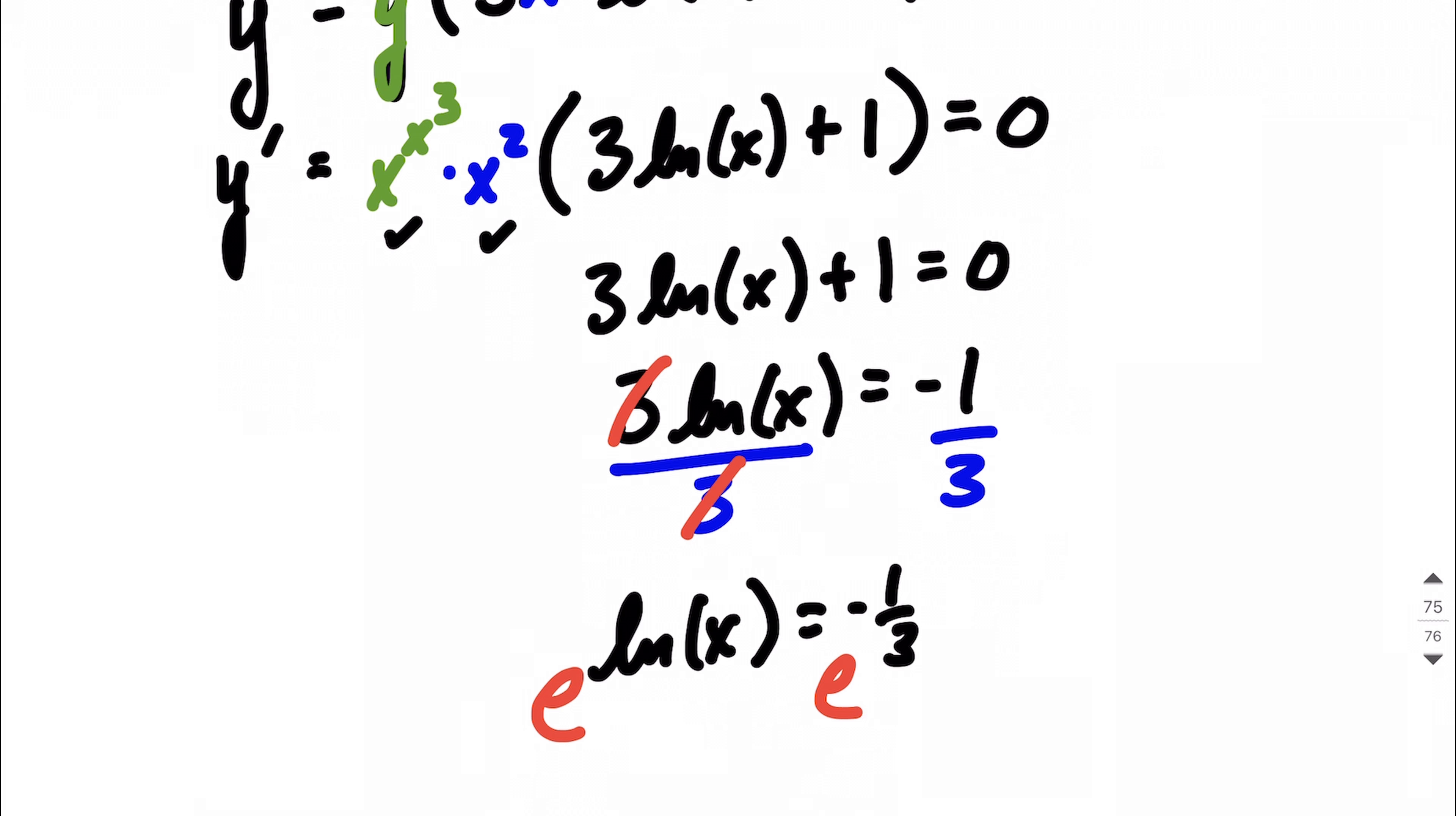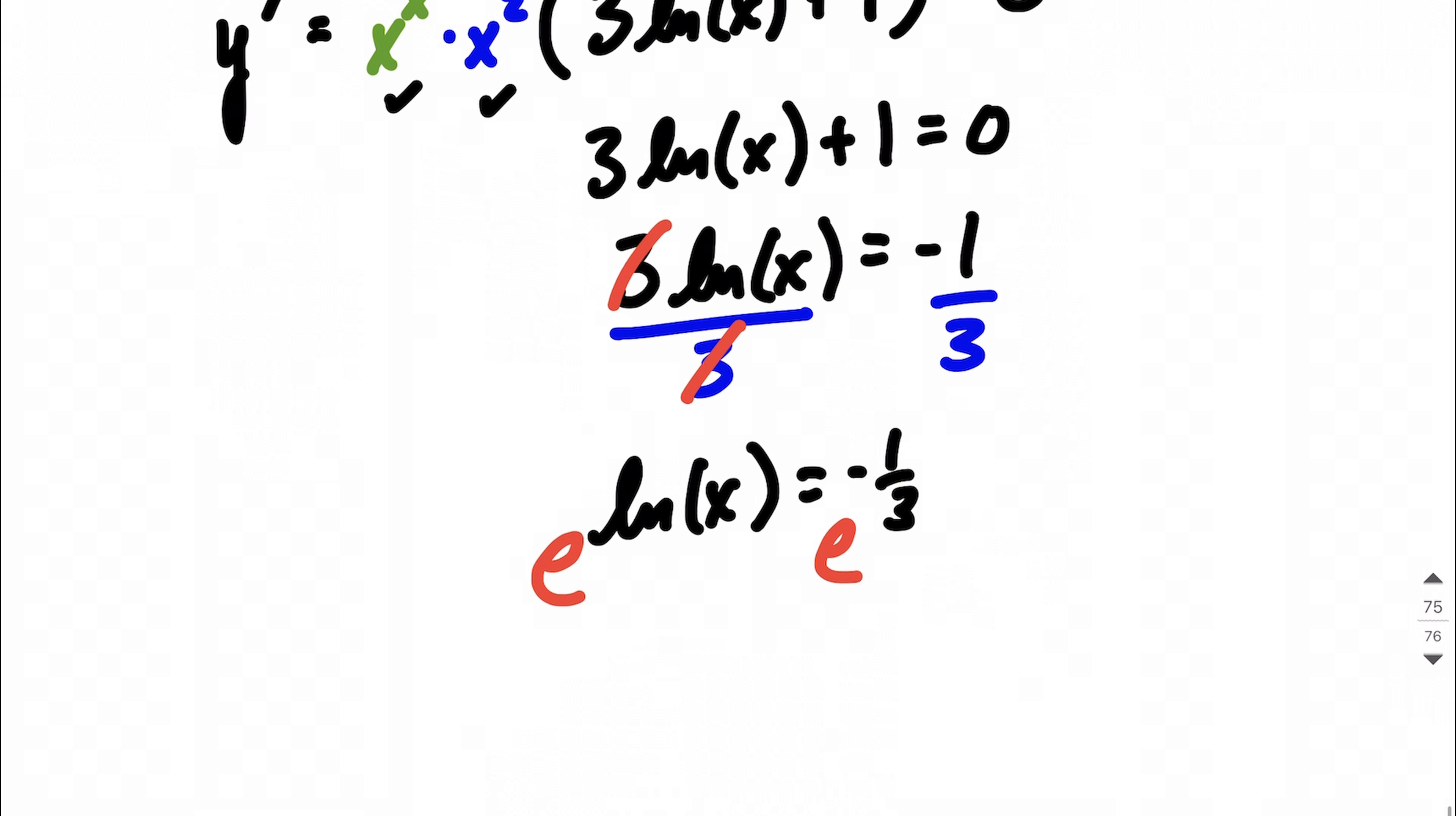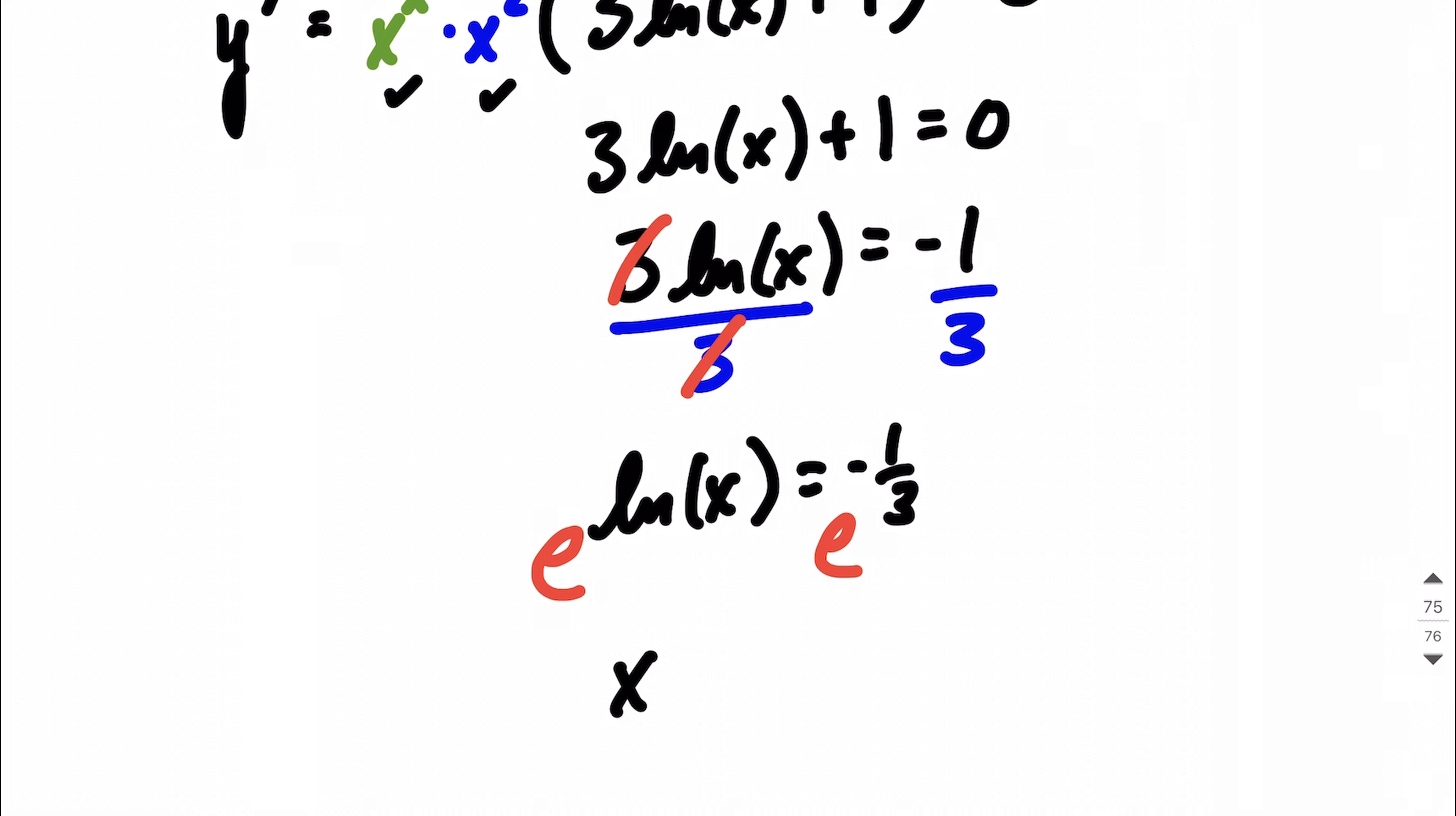The reason being, on the left-hand side, when you compose together a natural log and e to a power, you get this nice canceling out. Those are inverse functions. You get x all by itself. Then you have e to the negative 1 third power, which is technically our answer.